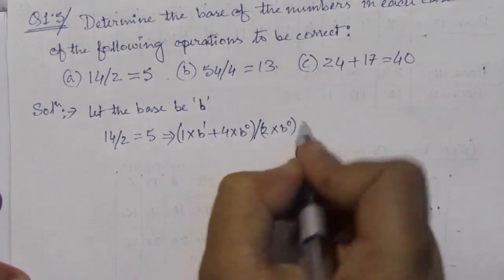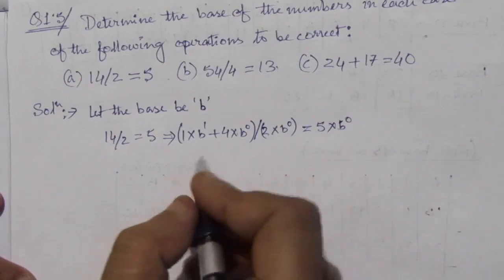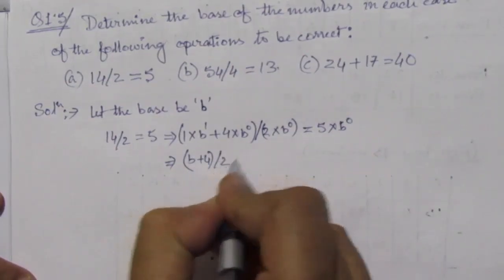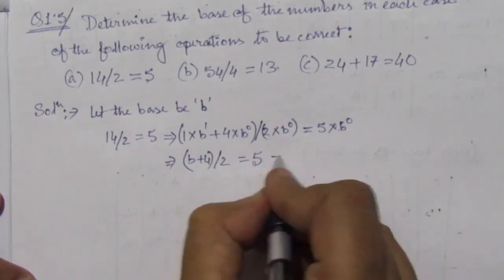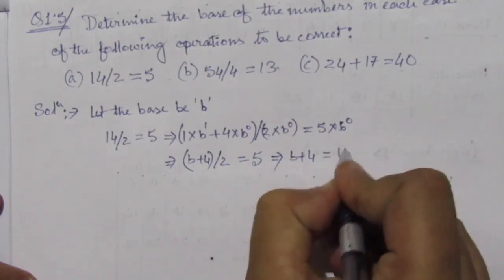Now solve this problem: b + 4 divided by 2 equal to 5. From this we will get b + 4 = 10, which implies b = 6.